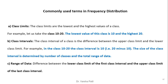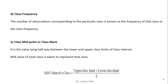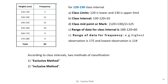Commonly used terms in frequency distribution: class limit — for the class 10 to 20, the lowest value is 10 and the highest is 20. Class interval is the difference between them, so for 10 to 20, the class interval is 10. Range of the data is the difference between the lower class limit of the first class interval and the upper class limit of the last class interval. Class frequency is the number of observations present. Midpoint or class mark is the midway between the lower and upper class limits. For example, for class interval 120–130, class interval = 130−120 = 10, and class midpoint = (120+130)/2 = 125.